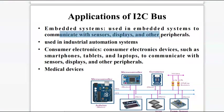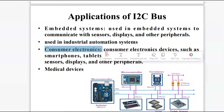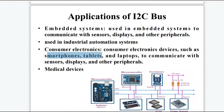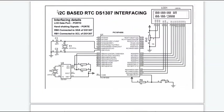Applications of the I2C bus or protocol: I2C is used in embedded systems to communicate with sensors, displays, and other peripherals. It is also used in industrial automation systems, consumer electronics such as smartphones, tablets, and laptops to communicate with sensors and displays, and also in medical devices.